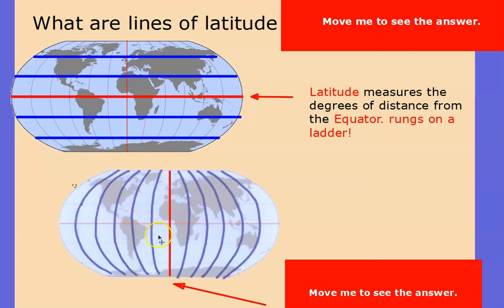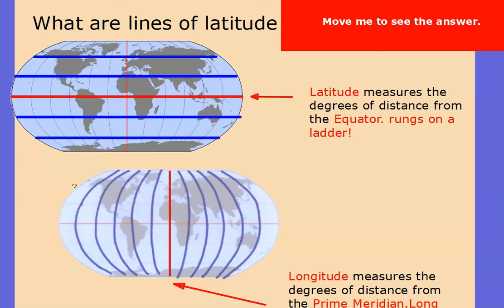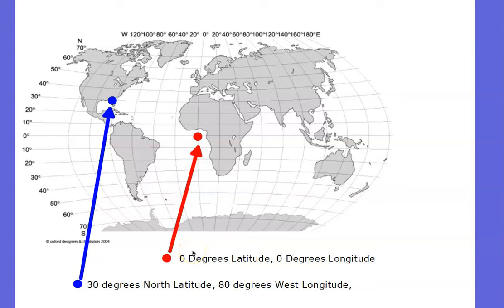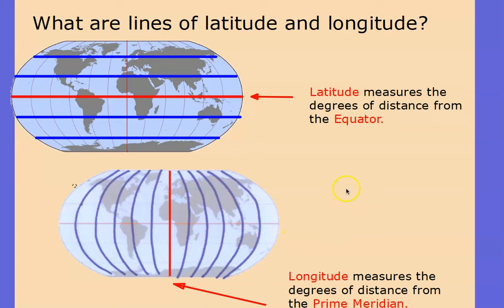What do you believe these lines are called — the ones that run from north to south? They are known as lines of longitude. These measure the distance in degrees from the prime meridian, shown here as this red line. As a brief review: lines of latitude measure the degrees of distance from the equator — they run east to west but measure north and south distance. Longitude lines measure the distance in degrees from the prime meridian, which runs north to south but measures the degrees east or west of that prime meridian.